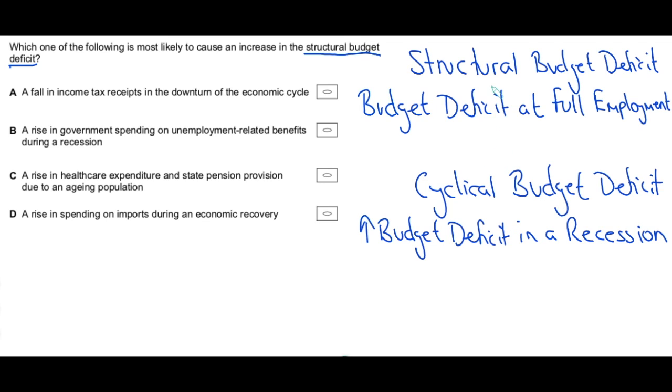Okay, so knowing that it should then be okay to get this answer. So let's go through each one and work out what the answer is. So what's A saying? A fall in income tax receipts in the downturn of the economic cycle. Well that is true, that is going to lead to a budget deficit but in the downturn, in a recession, that's a cyclical budget deficit, not a structural budget deficit. So A is wrong.